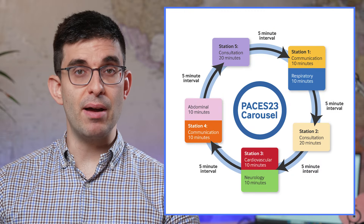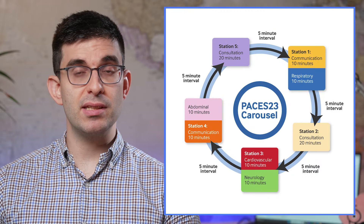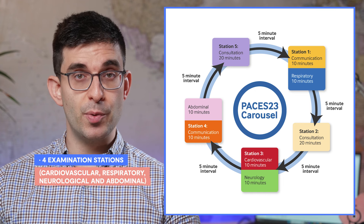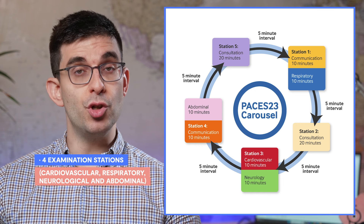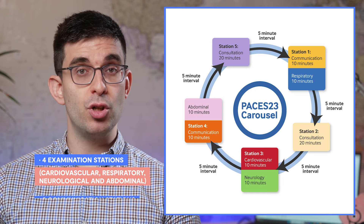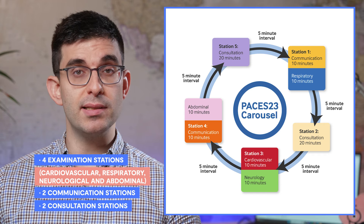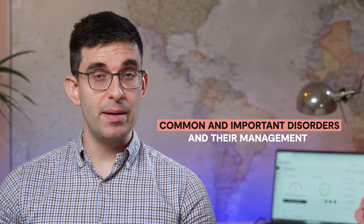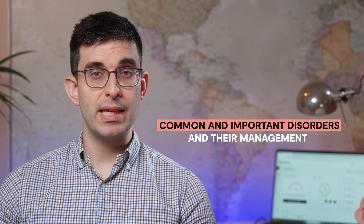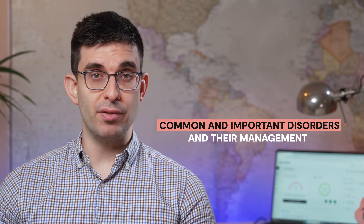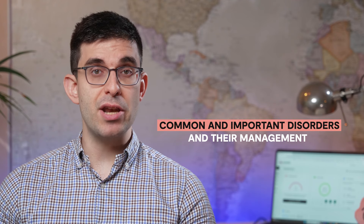This format is referred to as the PACES carousel. As you can see from this diagram, the stations consist of four examination stations — cardiovascular, respiratory, neurological, and abdominal — two communication stations, and two consultation stations. The aim is to ensure that the candidate understands common and important disorders they may come across during their specialist training at an entry level, and how to manage them practically.